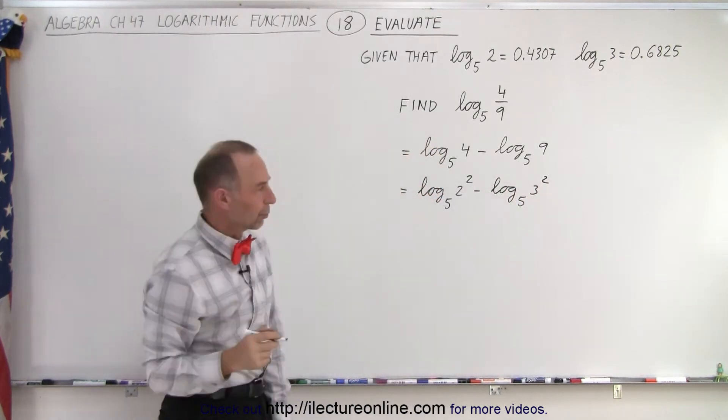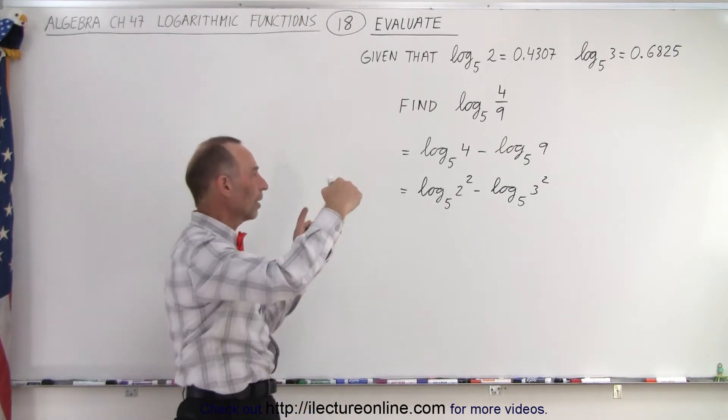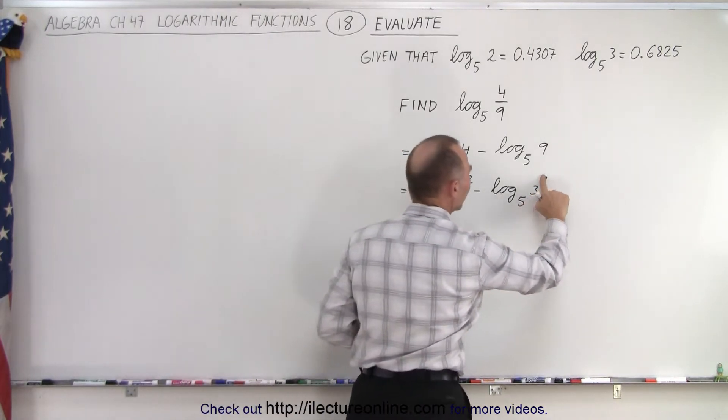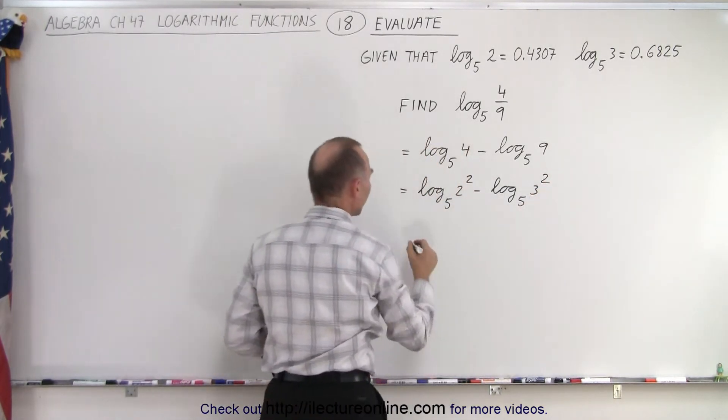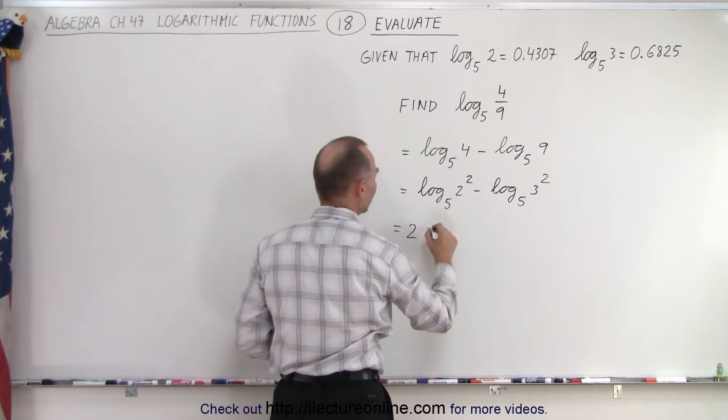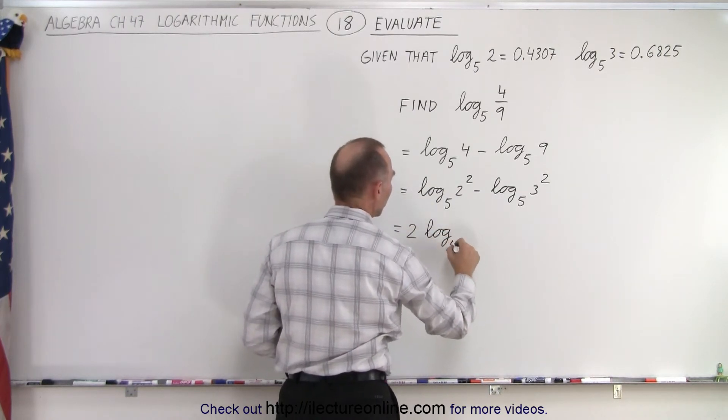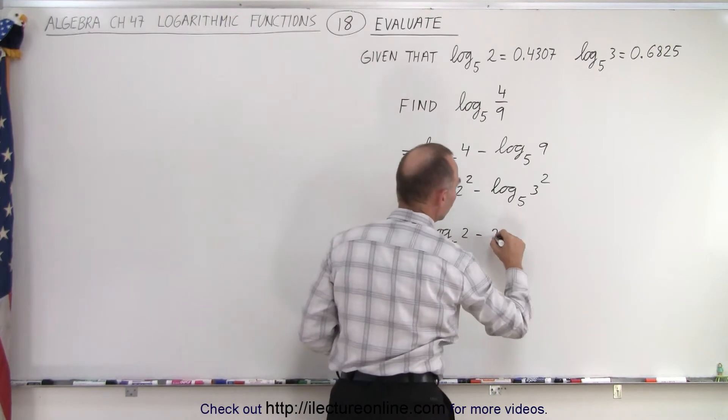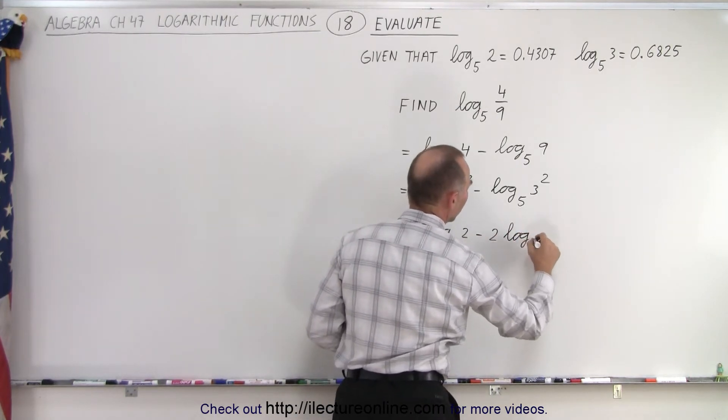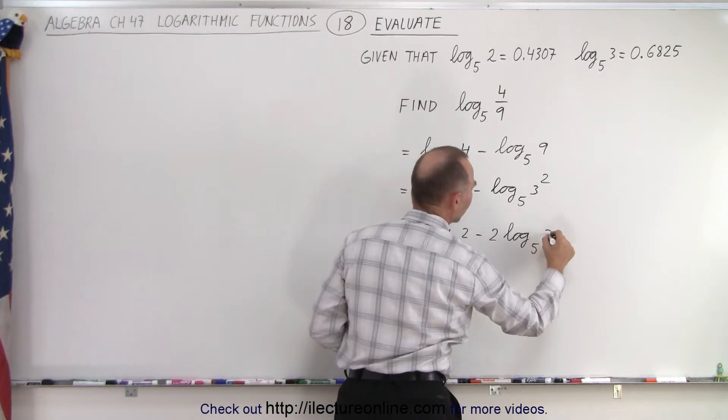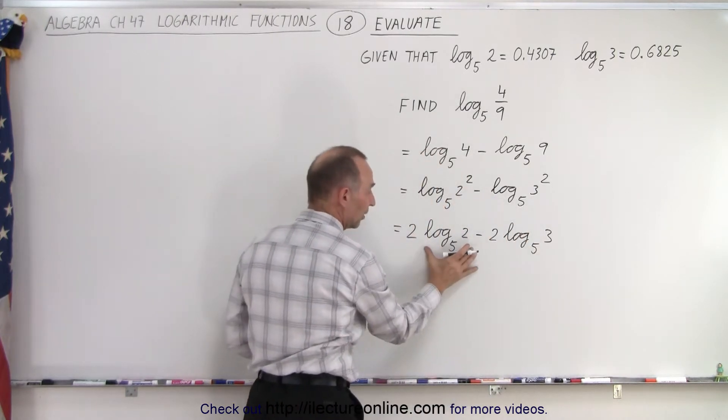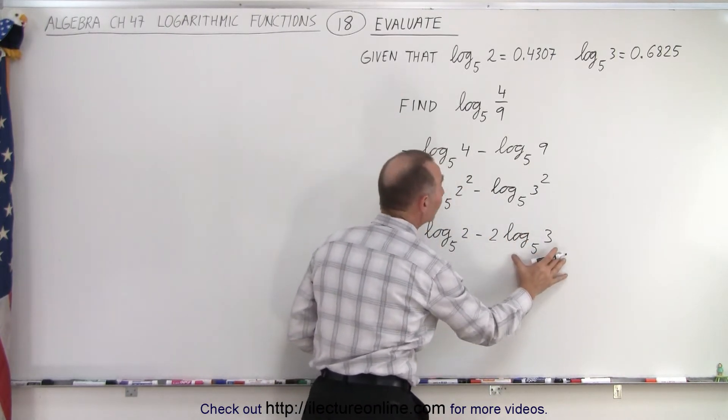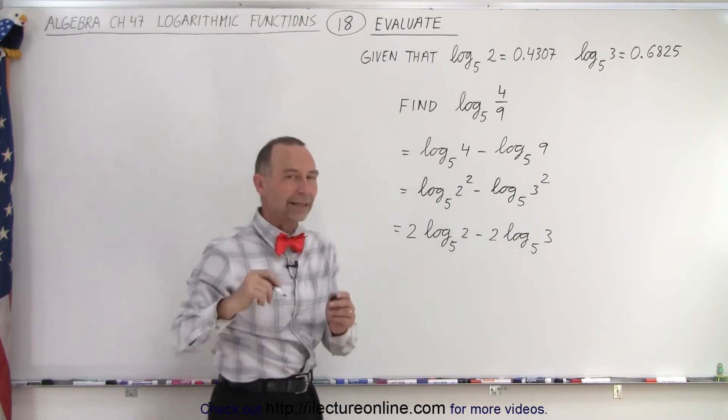And now we can use the power rule. Now we can take those 2's, the exponents, and write them in front. So this can be written as 2 times the log base 5 of 2 minus 2 times the log base 5 of 3. And notice we know what this is equal to because they gave that to us. So now let's make that substitution.